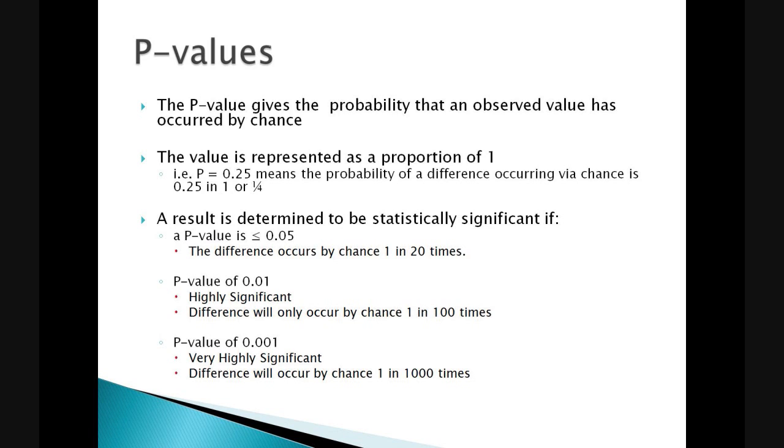As a result, we typically determine p-values to be statistically significant if their value is less than or equal to 0.05, which means that the difference that occurs can only occur by chance 1 in 20 times it is investigated. A highly significant result is a p-value of less than 0.01, i.e. the difference will only occur by chance in 1 in 100 times investigated. And a p-value of 0.001 is considered to be very highly significant as the difference will only occur by chance in 1 in 1,000 times it is investigated.